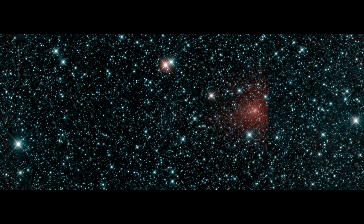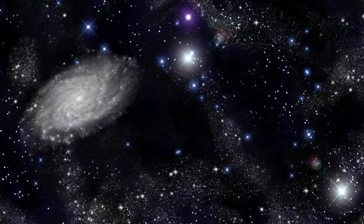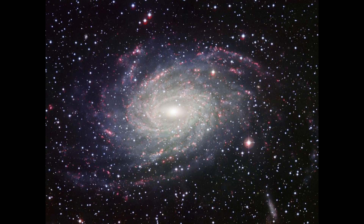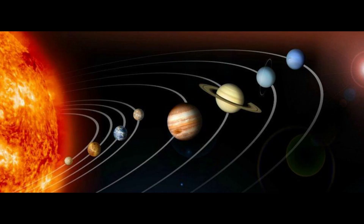In the universe, there are many galaxies. There are over 100 million galaxies in the universe. One is our Milky Way galaxy. In the Milky Way galaxy, there are 500 solar systems. One is our solar system.